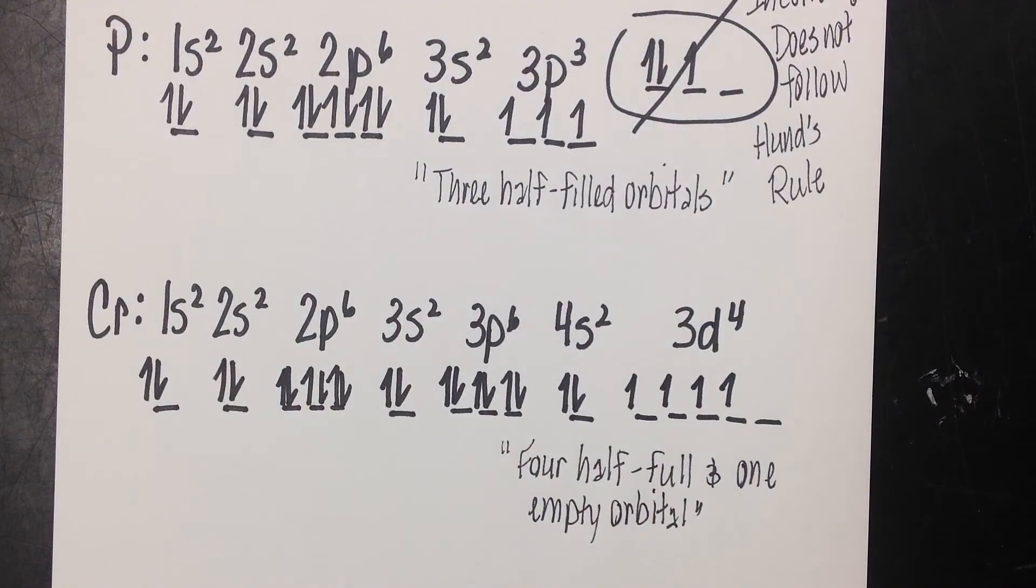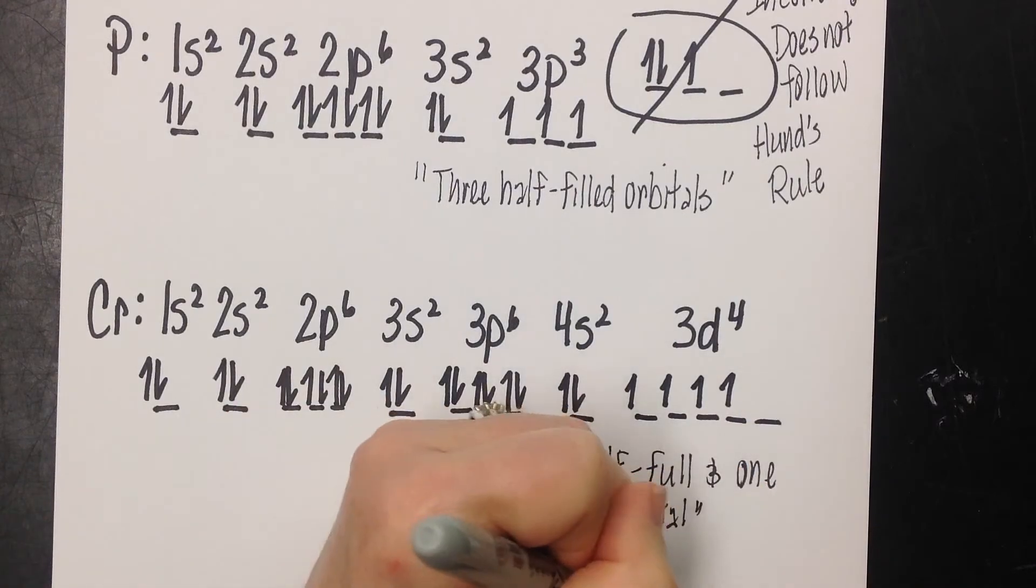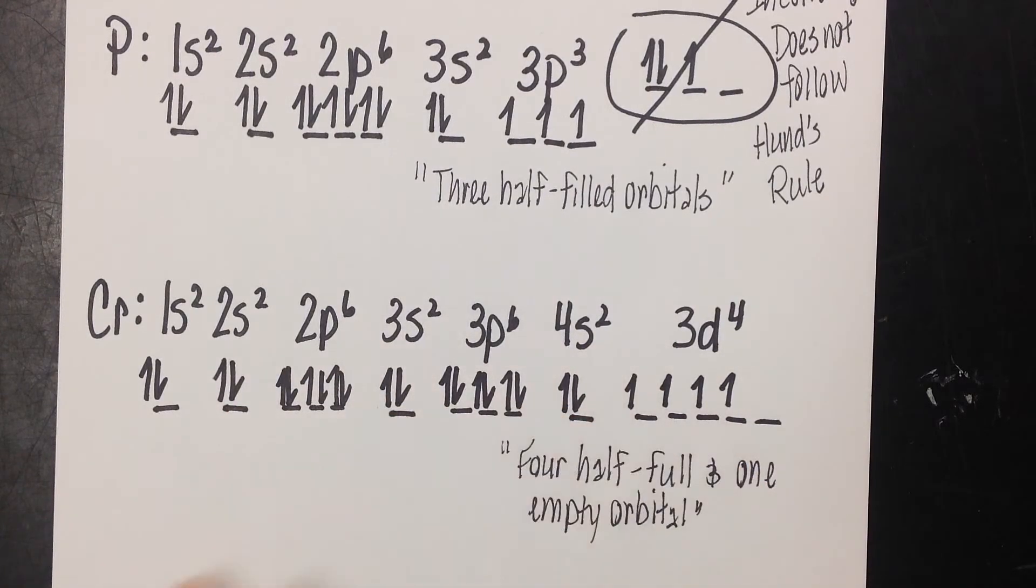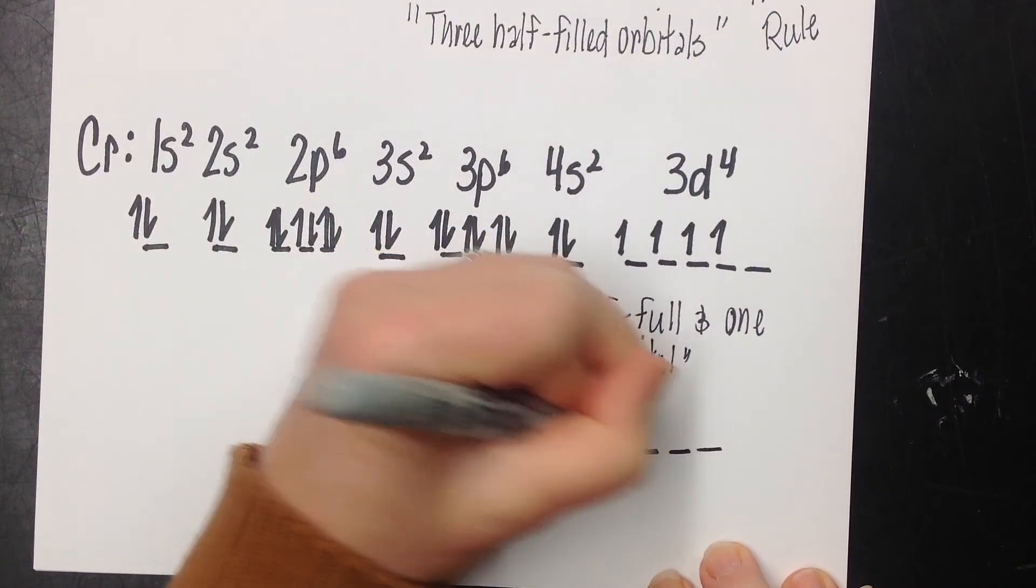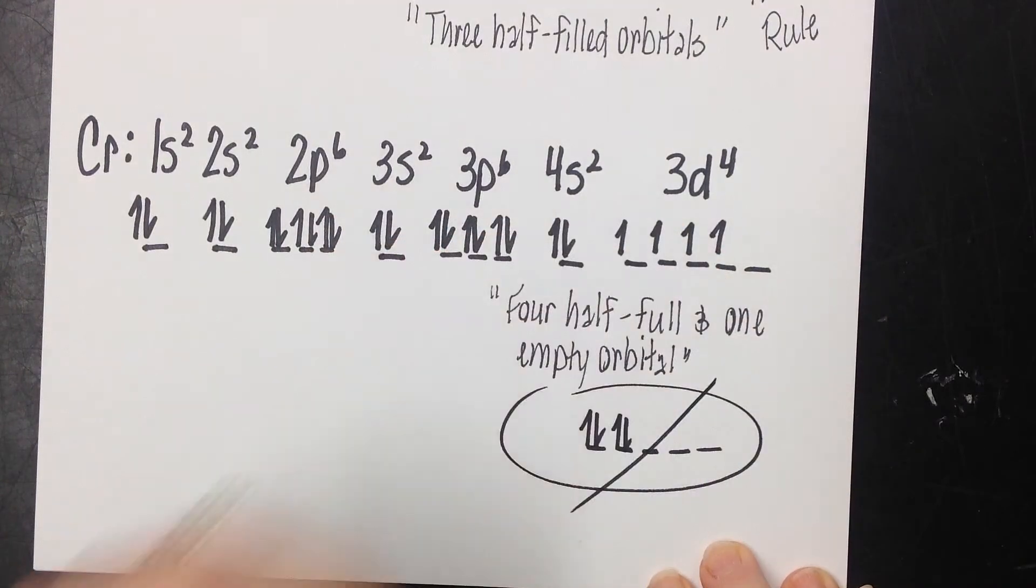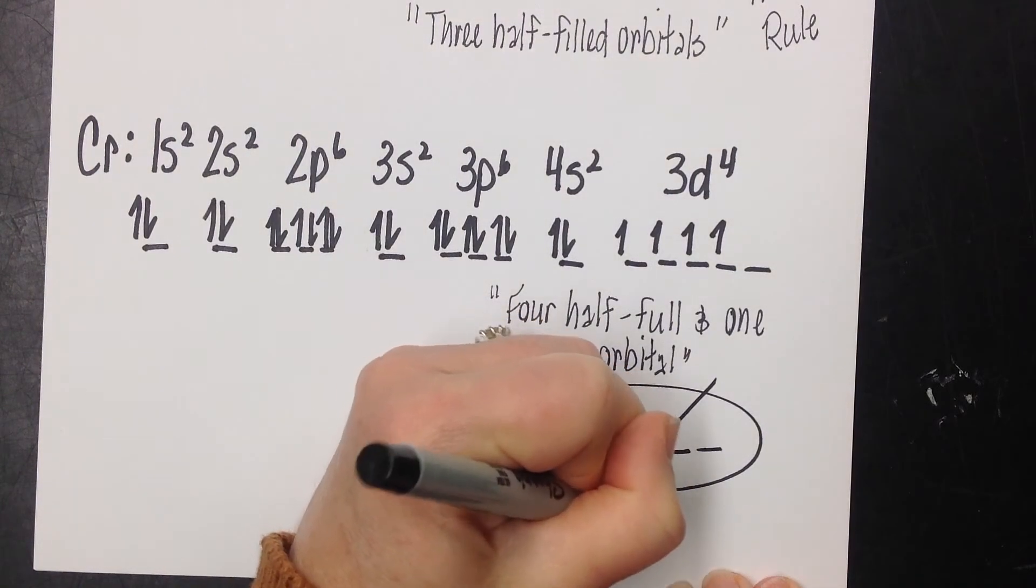And again, it is wise to note here, had we not followed Hund's rule on this one, we would have had something that looked like this, 1, 2, 3, 4. And we know that would have been incorrect because it did not follow Hund's rule.